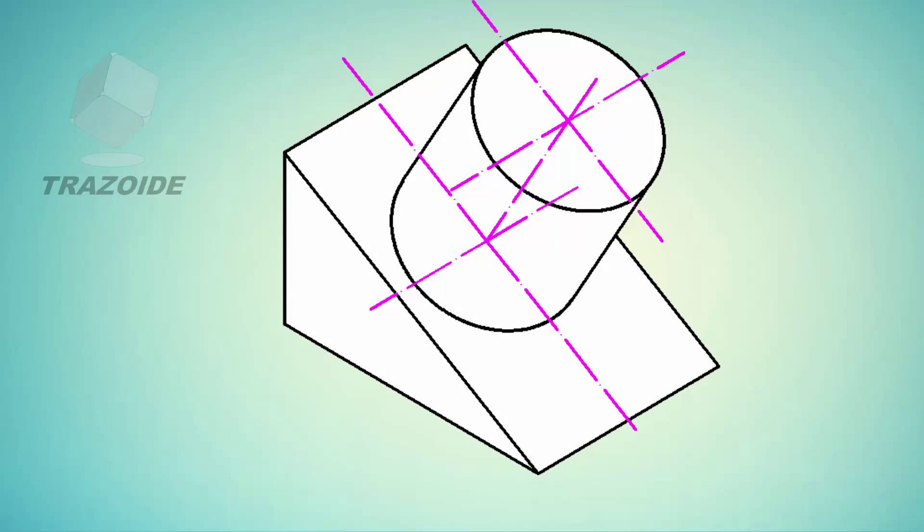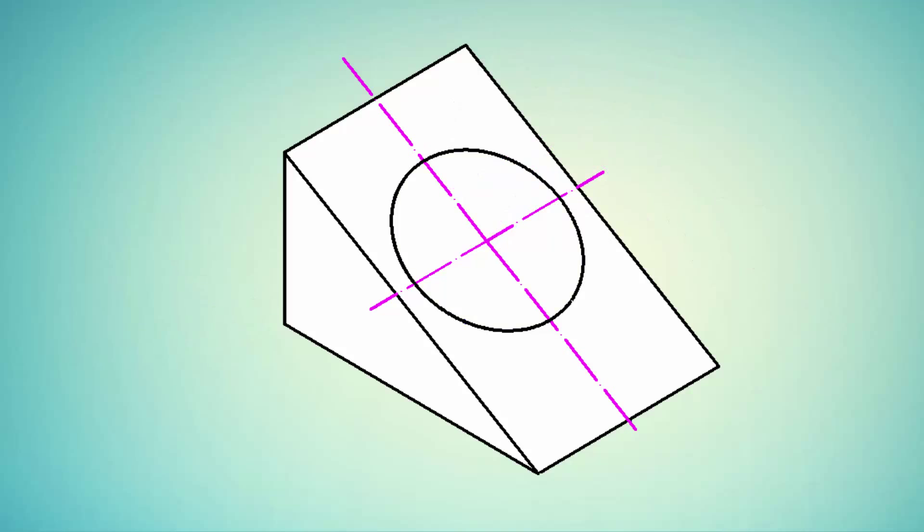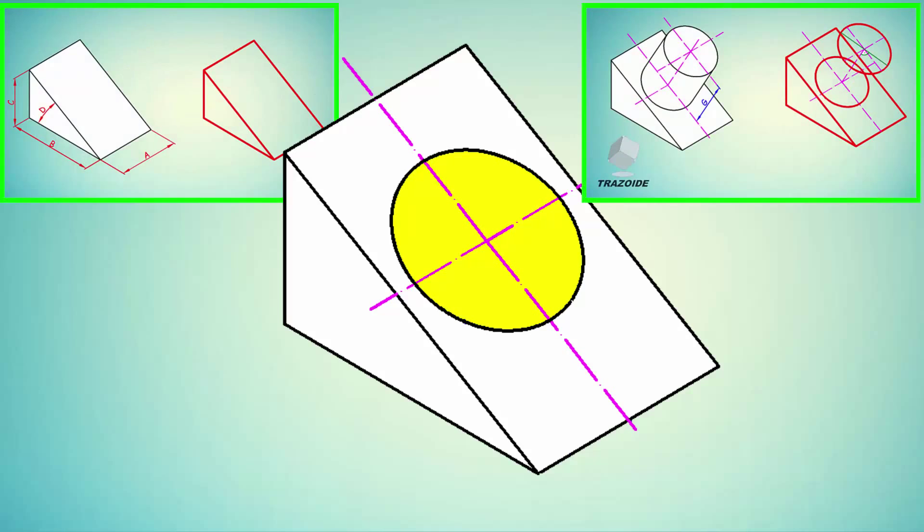We will solve this simplified piece, formed by a wedge and a cylinder. We will focus on drawing the circumference of the cylinder base by despondency and affinity. The layout of the wedge and the height of the cylinder are already explained in the first part.